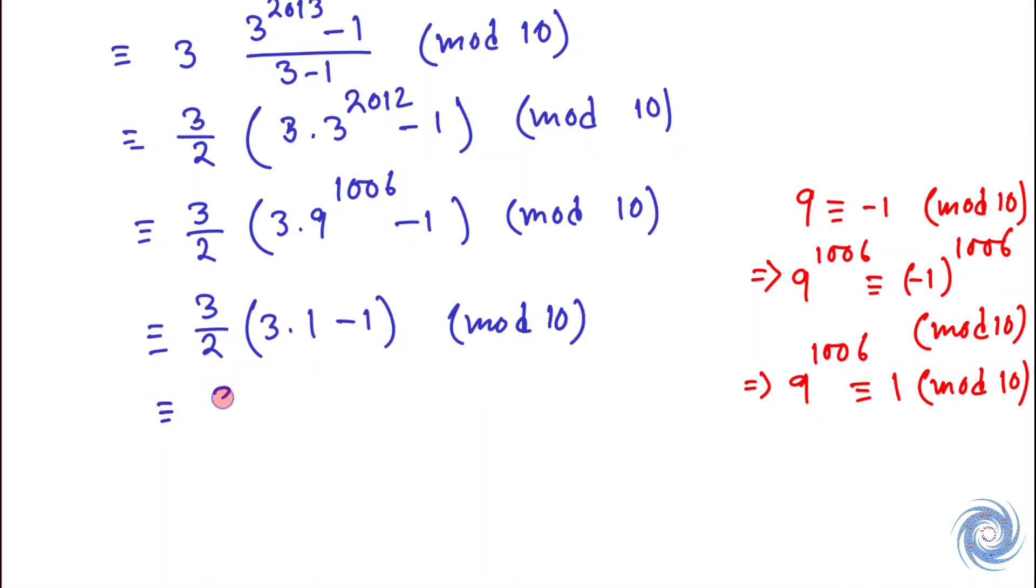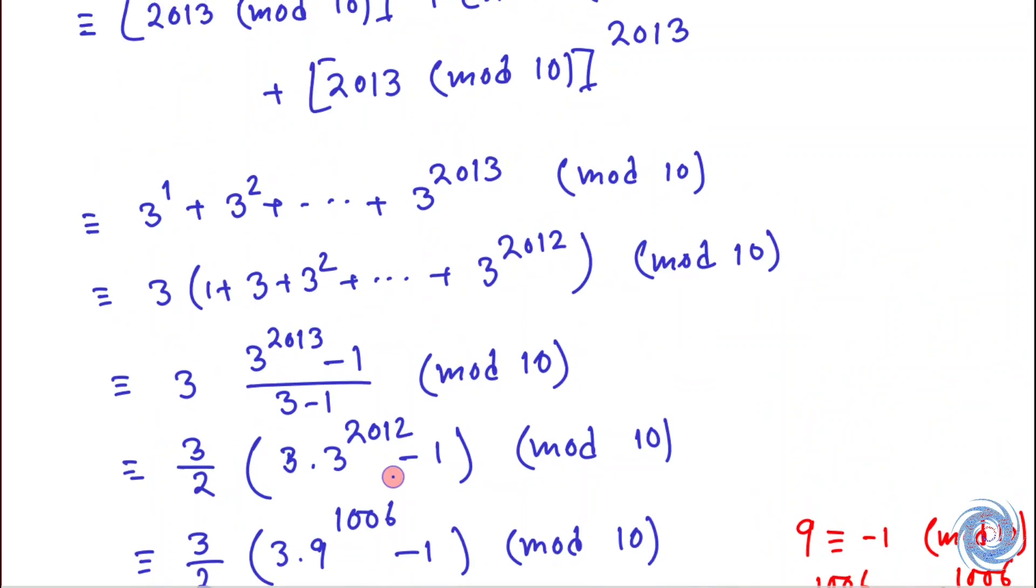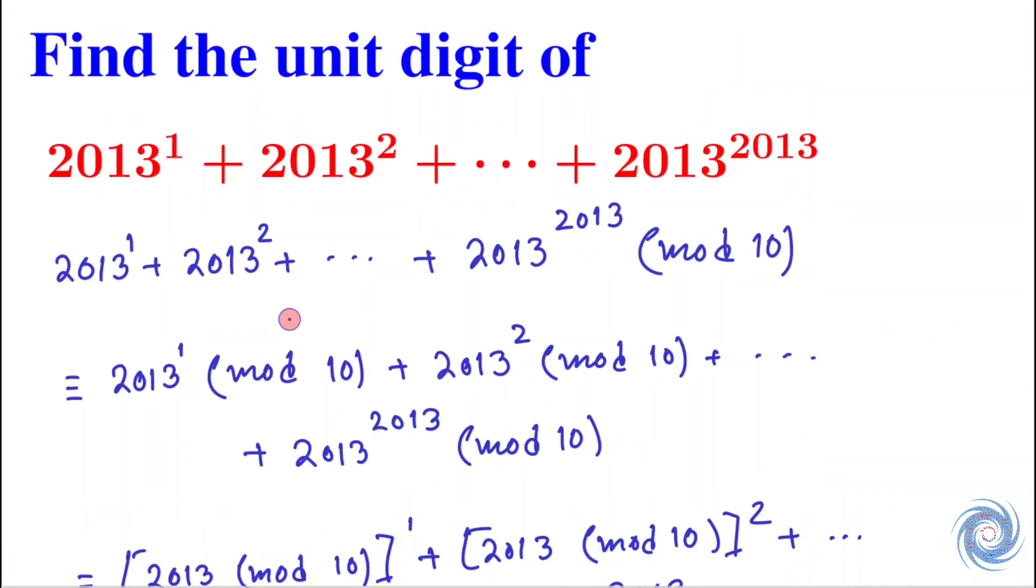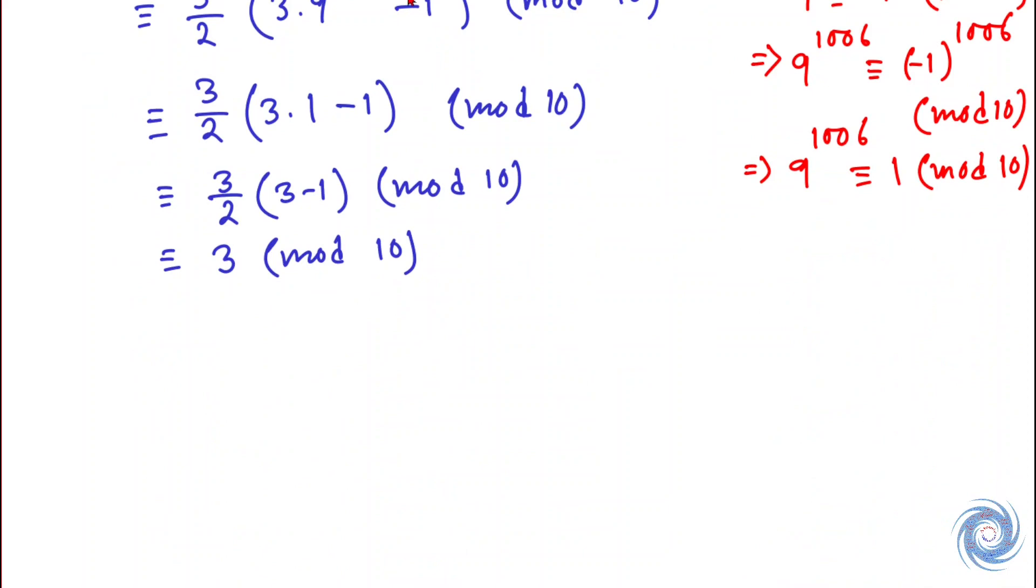So finally, this expression equals 3 mod 10. Therefore, the unit digit is 3.